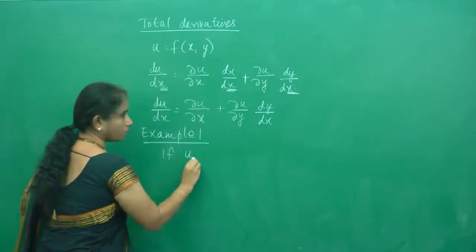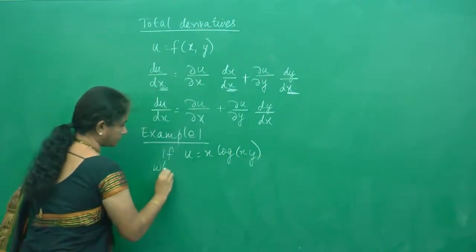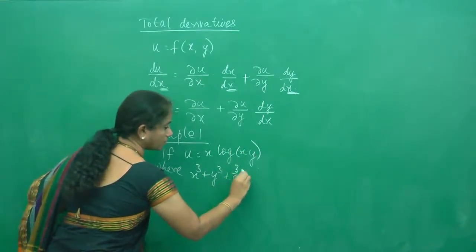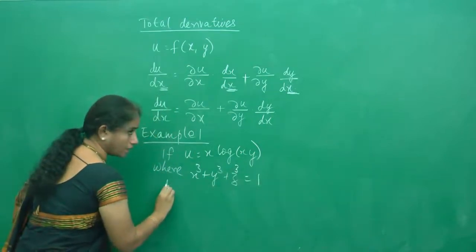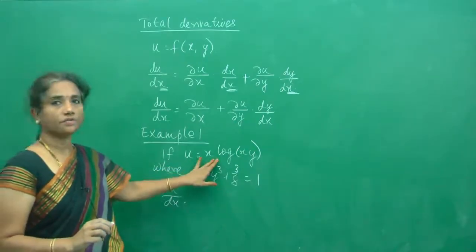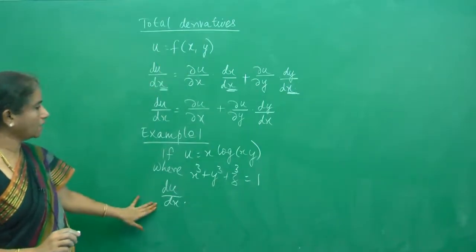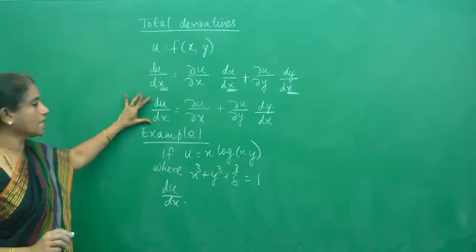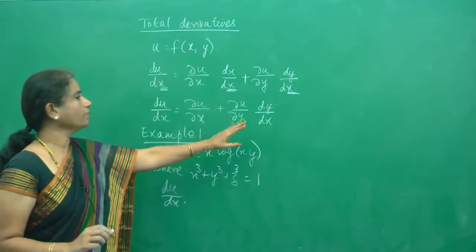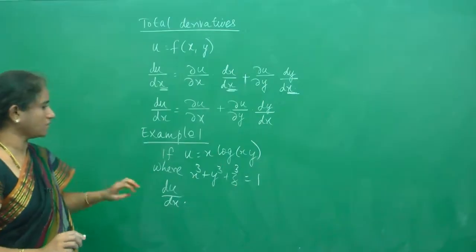If u equals x·log(xy) where x³ + y³ + z³ = 1, we are asked to find du by dx. Here u is a function of x and y, and since z is included, we can include one more term: ∂u/∂z plus dz/dx. We will handle that when the question requires it.